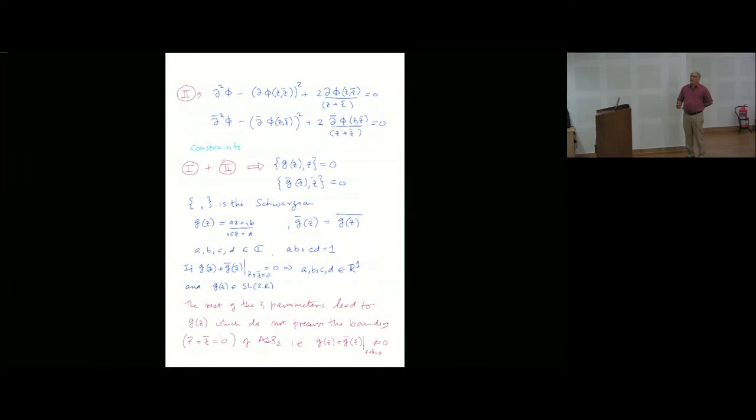The Schwarzian must vanish, or specifically G of Z is just a linear transformation like this, where A, B, C, D are complex numbers. Now, amongst this six parameter family, there are those which just do not change the boundary. You see the boundary of the right half Poincaré plane was Z plus Z bar equal to 0. I want to mod out by those transformations which do not change the boundary.